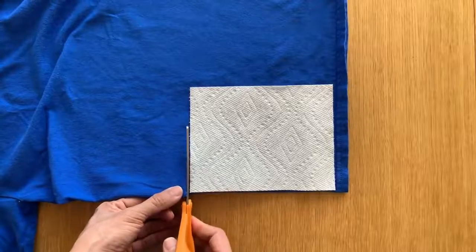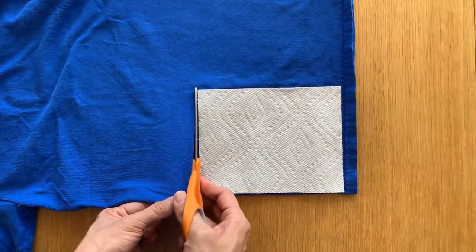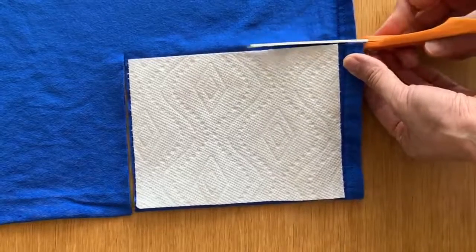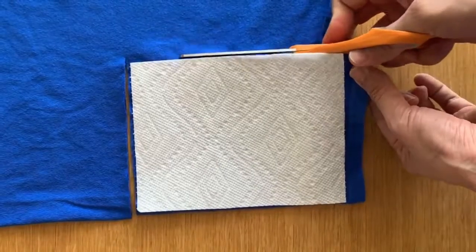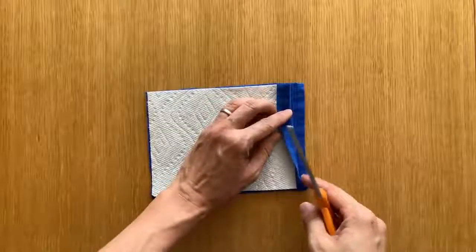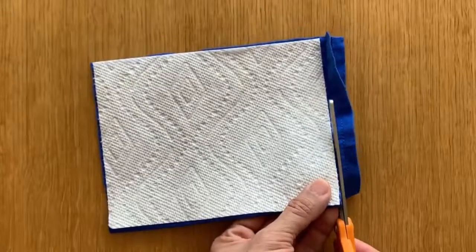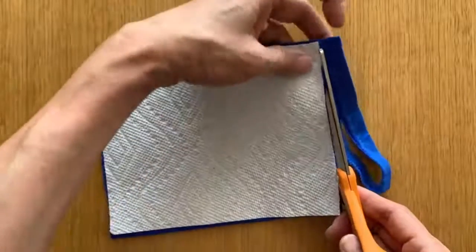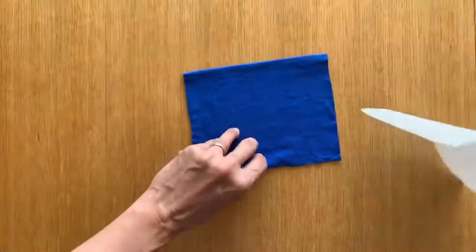And if you're going to err on one side, I would err on cutting it a little bit bigger. As you wash it, it'll shrink. There's a little hem left right here. Let's just cut that off.